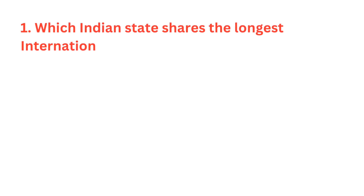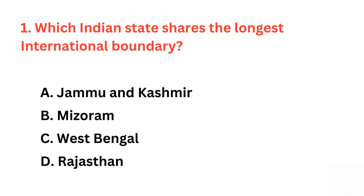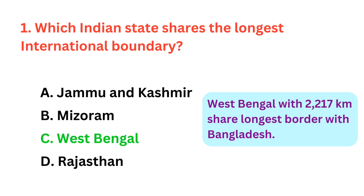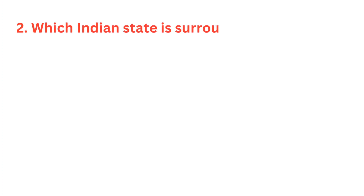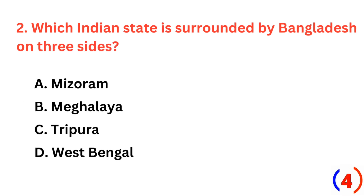Which Indian state shares the longest international boundary? The correct answer is option C, West Bengal. Which Indian state is surrounded by Bangladesh on three sides? The correct answer is option C, Tripura.